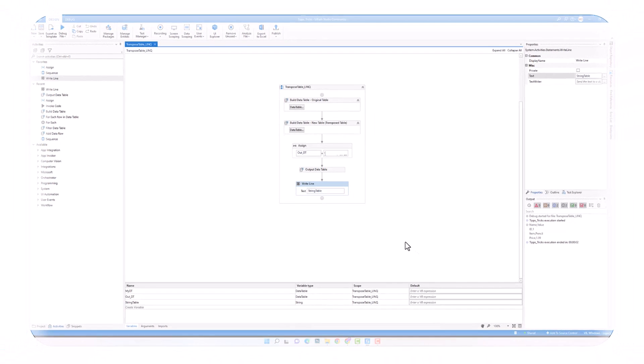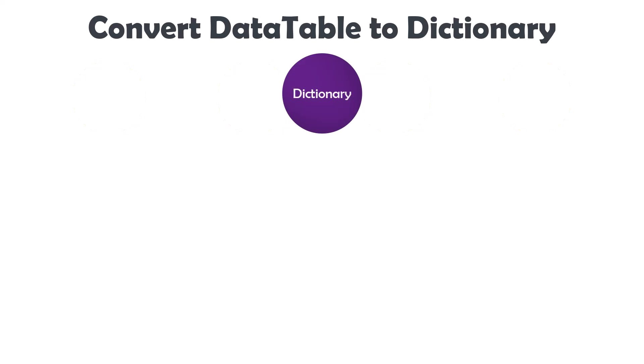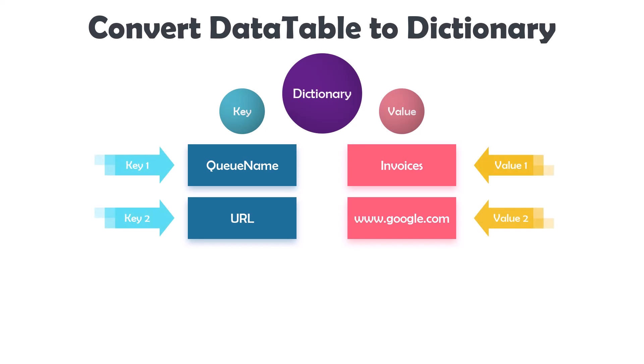As mentioned at the beginning, I will show you how to convert the transformed data table into a dictionary. Before that, let's do a recap about the dictionary data type — how it is structured and how to use it. Dictionary is like any other data type such as string, boolean, integer, etc. It's a data type for a variable where we can store data. The data in a dictionary variable has two parts: key and value. For example, this variable contains two keys, and for each key there is a value.